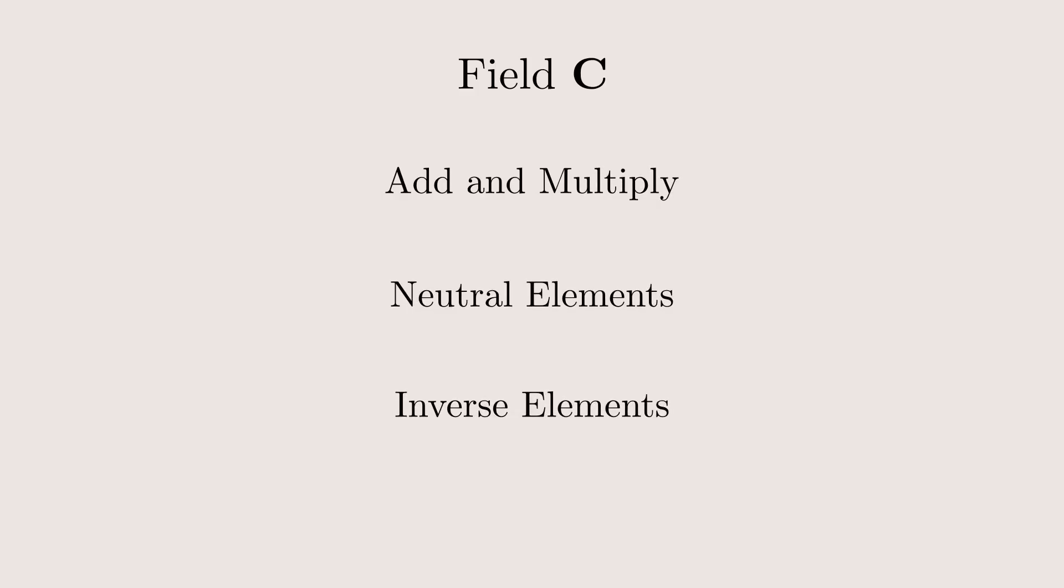In total, this means that the constructible numbers from two points O and E form a thing called field, which we call C from now on. You can add and multiply them. You have neutral elements for both operations, and for every element there's an inverse one, for both operations. Except for the origin there's no multiplicative inverse.